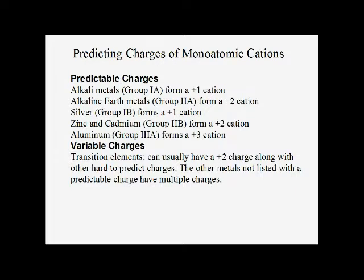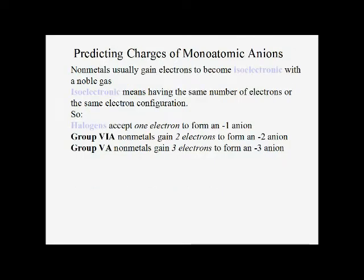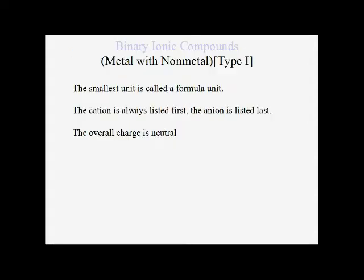Transition elements often have a plus two charge along with some other additional charge, so plus two is a common charge for the transition metals. The predictable charges for the anions are: minus one for the halogens, minus two for the oxygen group, and minus three for the nitrogen group.